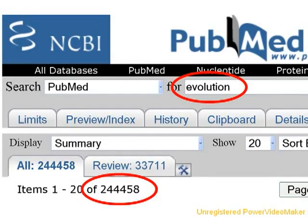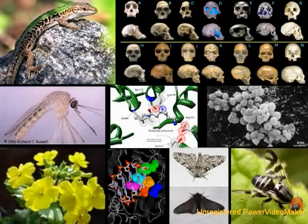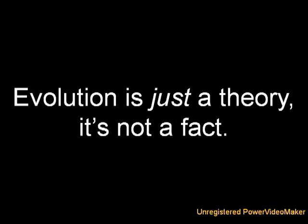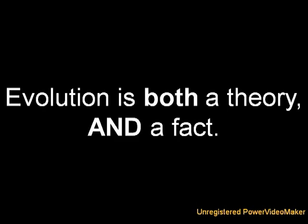Evolution is a theory — the highest status an idea can ever reach in science — because it is currently supported by over 240,000 scientific peer-reviewed articles containing millions of independent verifiable facts, collected by tens of thousands of scientists working over the past century and a half. It is disproved by none, and no better ideas have yet to be proposed. But evolution — the direct observation that species do change over time — is also a verifiable fact. So the next time a creationist makes the argument 'evolution is just a theory, it's not a fact,' you'll know to correct them: evolution is both a theory and a fact.